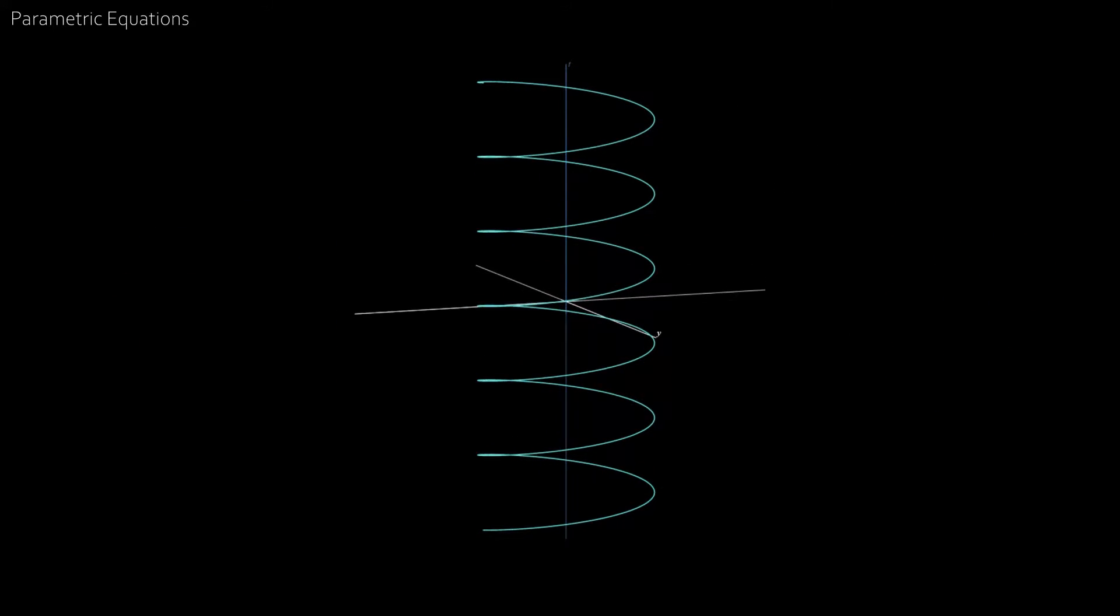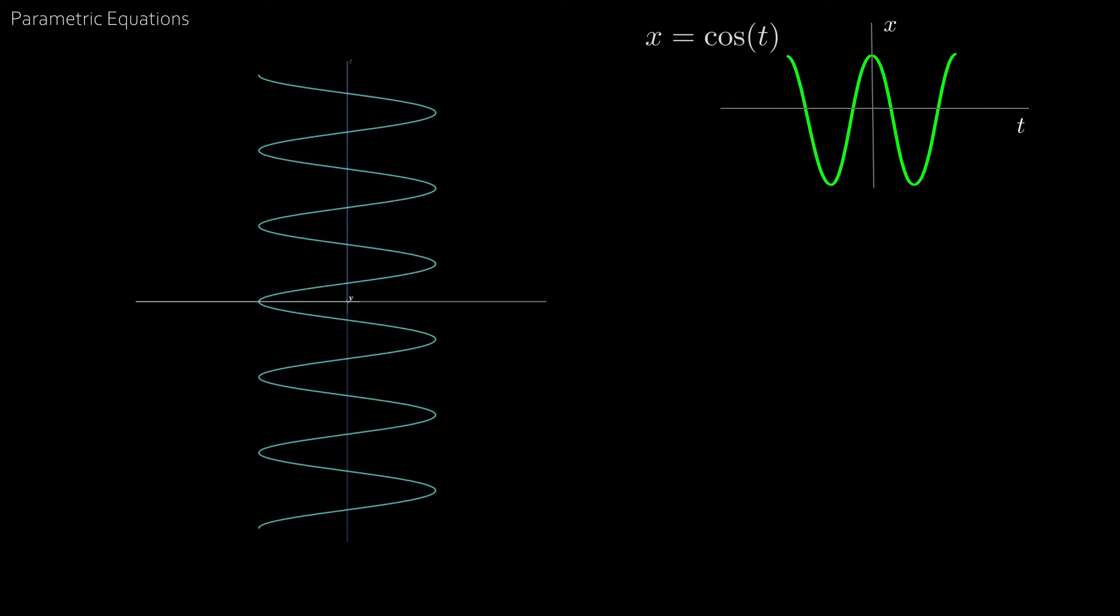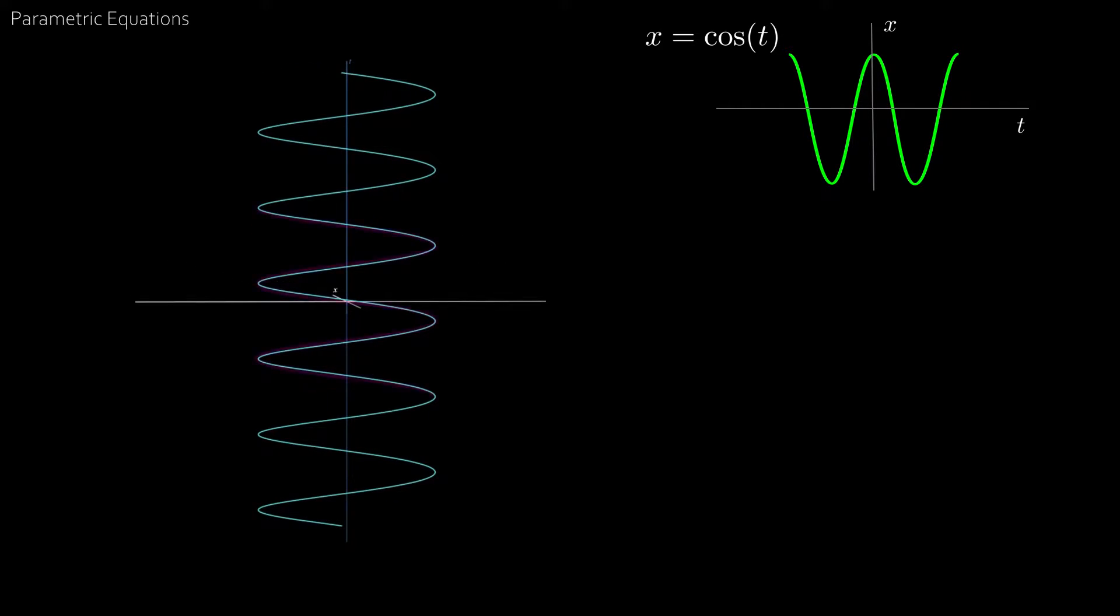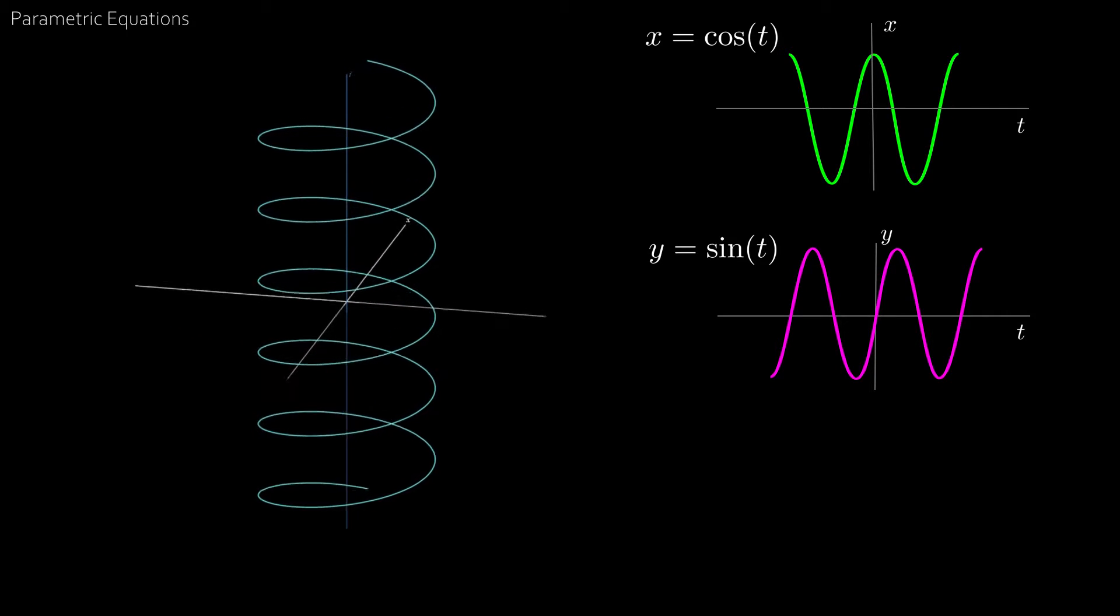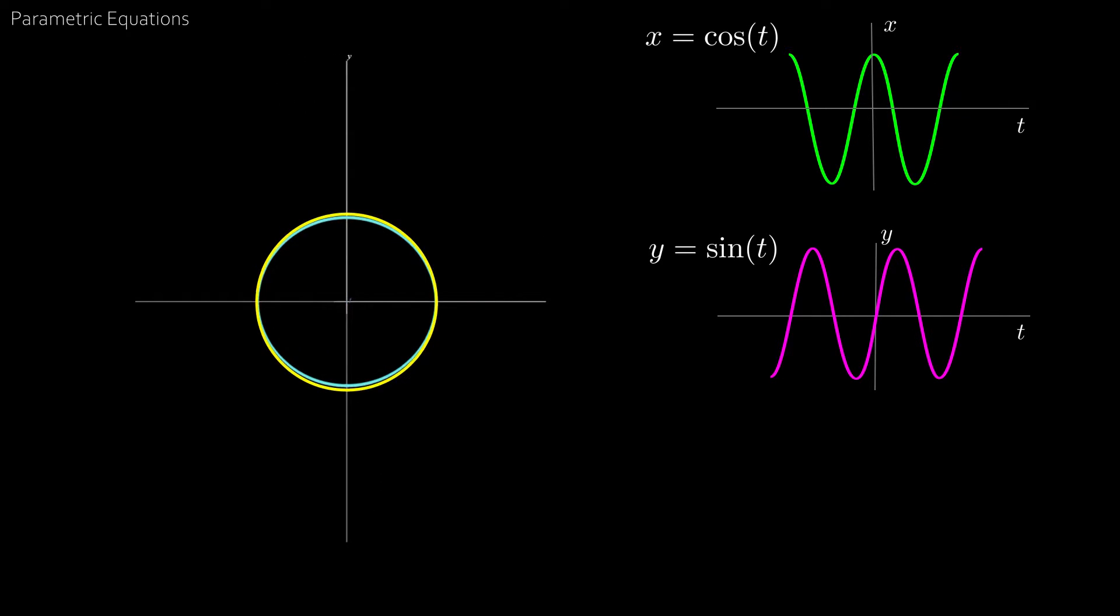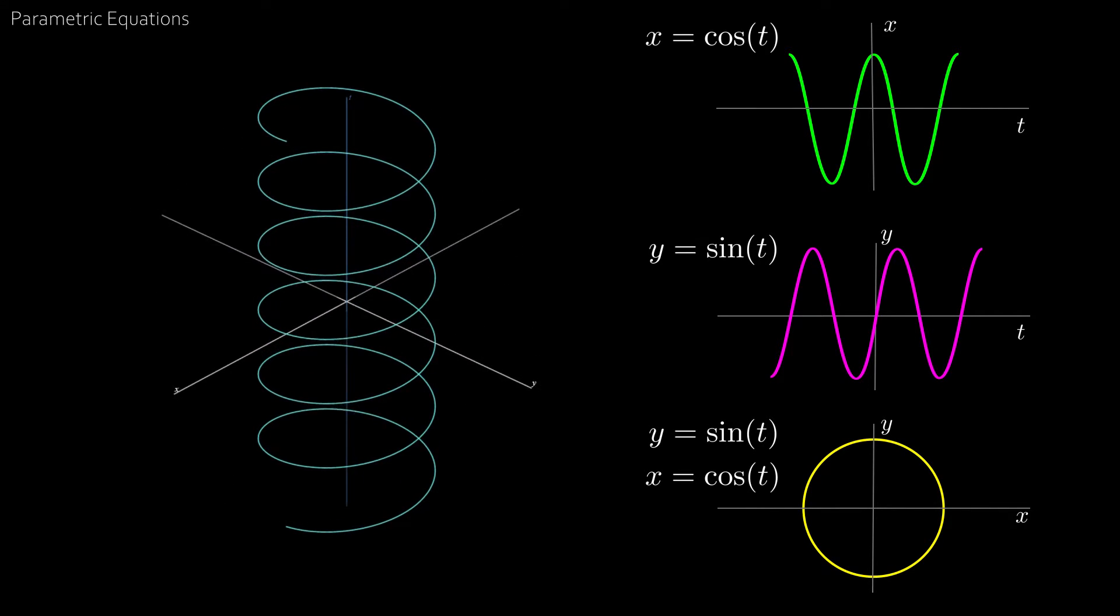Now if we line up with the x-axis, we see that we actually get the graph of x equal to cosine t, our first blueprint. If we rotate around and line up with the y-axis, we get a graph of y equal to sine t, our second blueprint. And for the finale, if we align ourselves with the t-axis, we get our good old unit circle. So these blueprints essentially act as the top and side views of the helix.